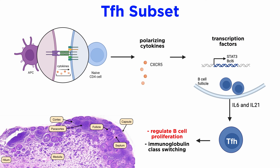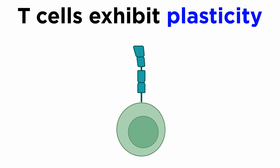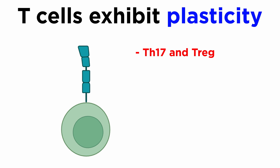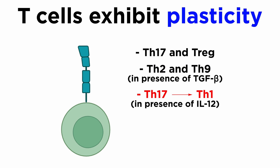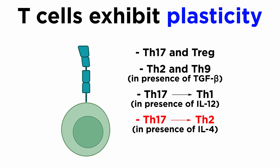A fundamental function of T helper cells is to regulate B cell proliferation and immunoglobulin class switching. Recent studies have highlighted that T cell differentiation is not terminal and that these cells exhibit plasticity. For example, in addition to Th17 and Treg displaying plasticity, Th2 and Th9 cells have also been reported to switch phenotype in the presence of TGF-beta. Furthermore, Th17 in the presence of IL-12 can switch to Th1 phenotype, and after interacting with IL-4, Th17 can differentiate into Th2 subset. Treg also showed a tendency to convert to Th17 and TFH.